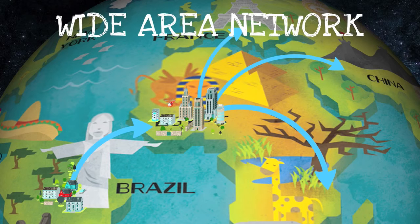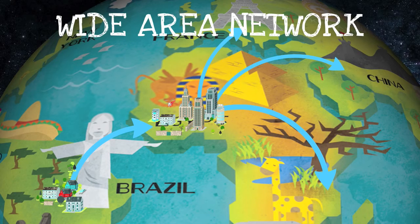WANs require many different types of hardware devices and transmission media, but perhaps the most important devices are the modems. The modem allows you to connect to networks outside of your LAN. The router is also very important as it makes the translation and passing of data packets possible across the WAN. The internet is an example of the world's largest wide area network.